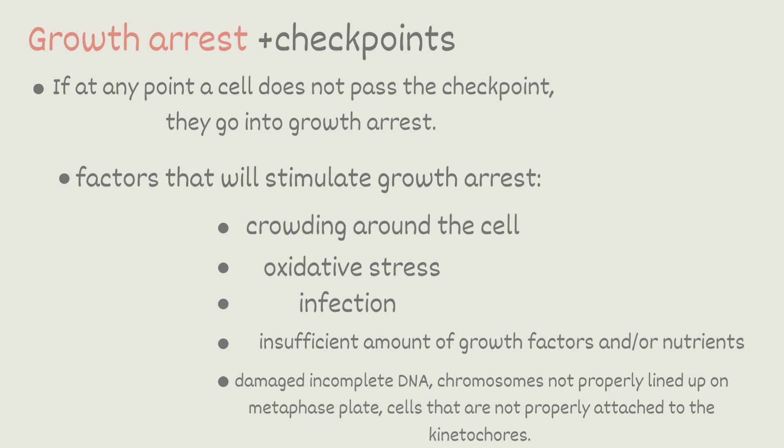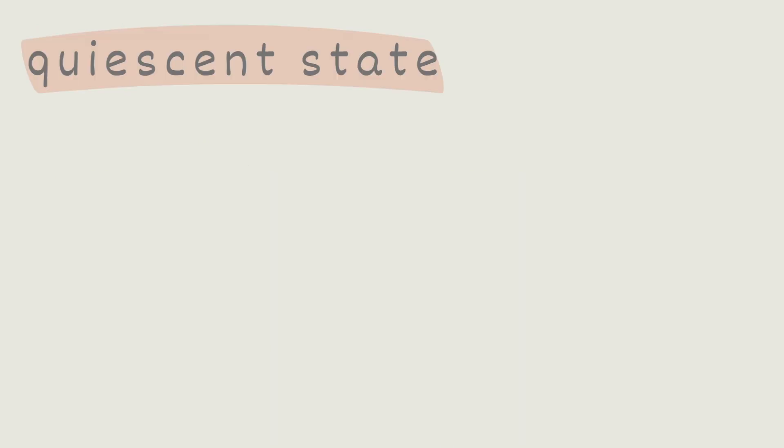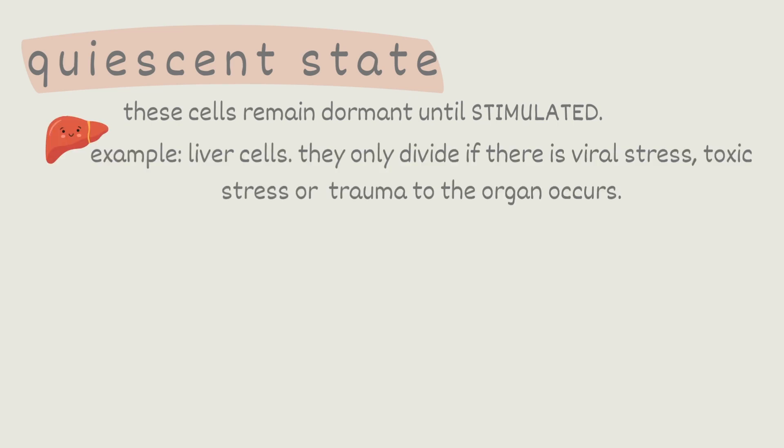Other than the checkpoints and the growth arrest, there are three different types of states the cells can be in when not in the cell cycle itself. The first is quiescent state. These cells remain dormant until stimulated. An example would be liver cells. They only divide if there is some kind of viral stress or toxic stress or trauma to the organ like if someone gets stabbed in the liver. It has the opportunity to grow back because all of the cells are able to replicate themselves if stimulated.